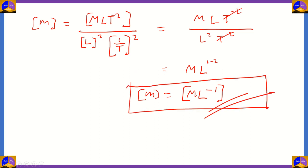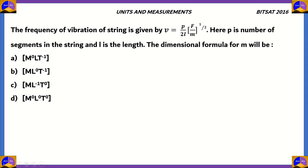There we have our final answer. Looking at our options, option C is the correct answer. In option C, we have M·L⁻¹·t⁰, which is just another way of representing M·L⁻¹, because t⁰ means there are no dimensions of t. So therefore, option C — M·L⁻¹·t⁰ — is the correct option for this question, which was asked in 2016.